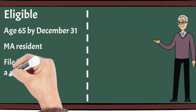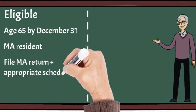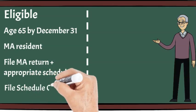You are required to file a Massachusetts income tax return along with all appropriate schedules, including a Schedule CB to claim the circuit breaker credit.